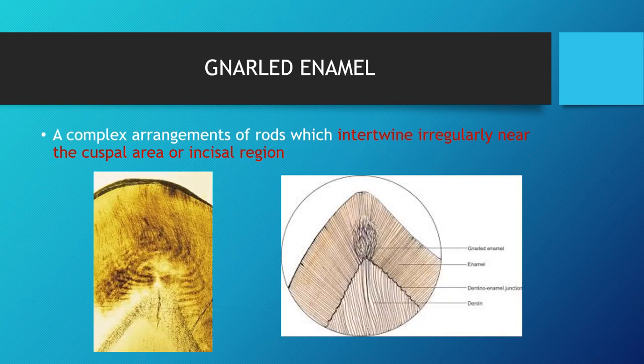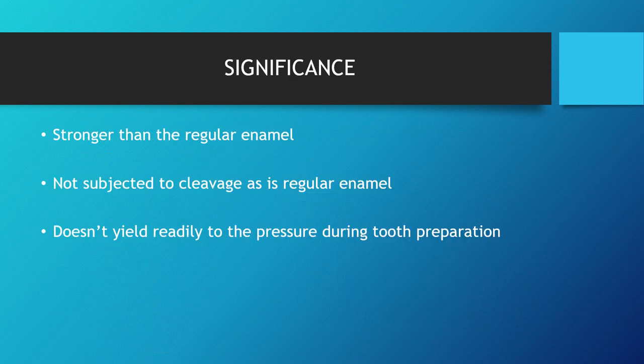Gnarled enamel is a complex arrangement of rods that intertwine irregularly near the cuspal or incisal region. Its significance is that it is stronger than the regular enamel found at the cervical or middle regions. When subjected to masticatory forces, gnarled enamel doesn't fracture easily and doesn't yield readily to pressure during tooth preparation.